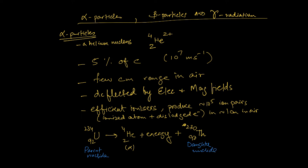This process is called transmutation — you've changed one element into another, just as the medieval alchemists were trying to do, except now it's supported by physics. We find that the number of neutrons and protons are conserved: 4 plus 230 equals 234, and 2 plus 90 equals 92.